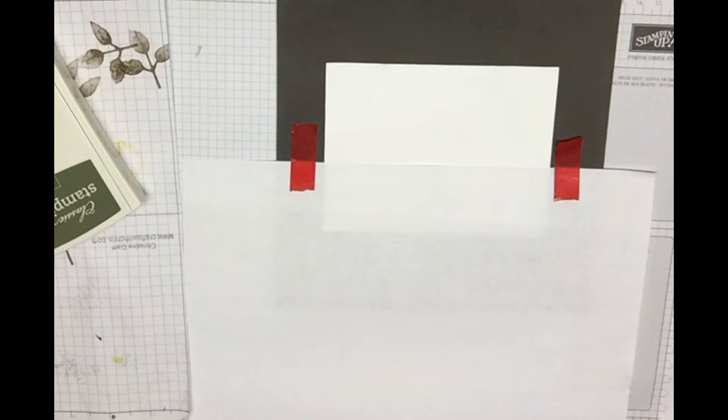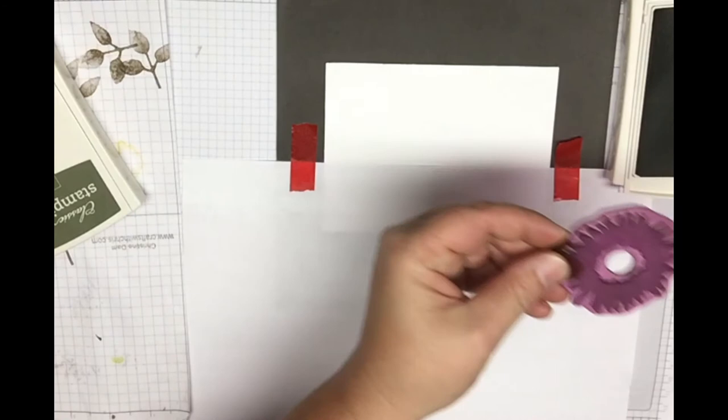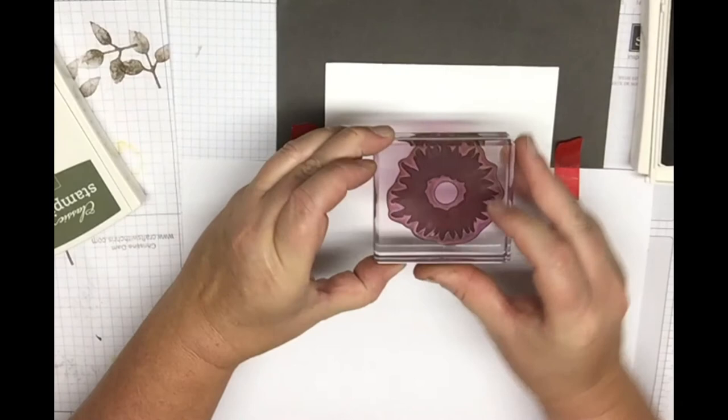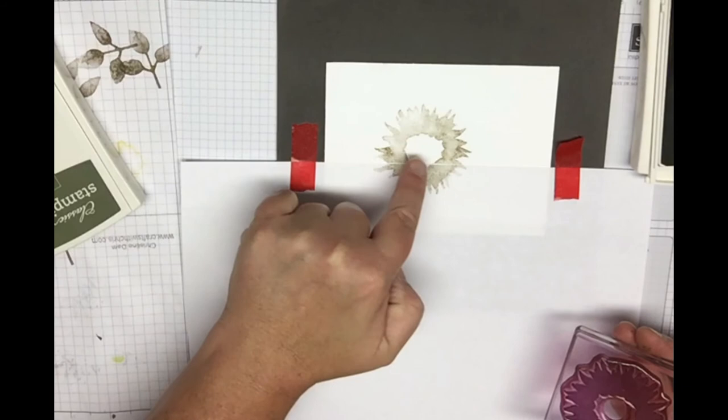The first thing we're going to stamp down is our Crumb Cake. You're going to take your first layer of that sunflower, the bigger piece here, and we're just going to stamp that down. You're going to stamp it partially on the paper, partially off. I try to keep the circle of your flower on your cardstock. Most of the circle is on my white cardstock.